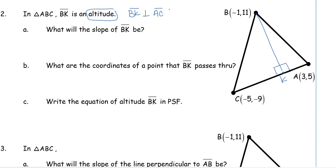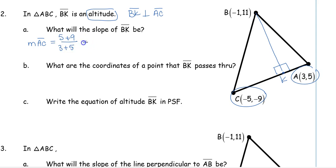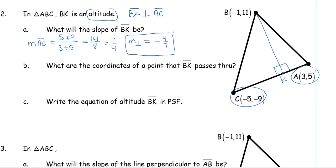Because BK is an altitude, BK must be perpendicular to AC, and perpendicular lines have opposite reciprocal slopes. So we find the slope of segment AC: 5 minus negative 9 on top gives 14, and 3 minus negative 5 on the bottom gives 8, so 14 over 8 reduces to 7 over 4. The slope of BK, being perpendicular, is the opposite reciprocal: negative 4 over 7.